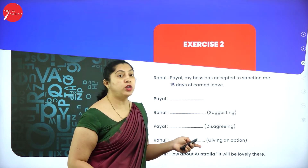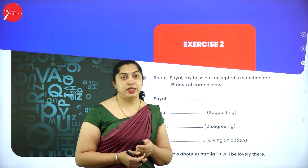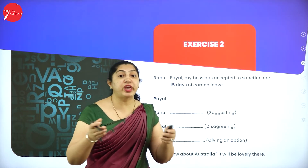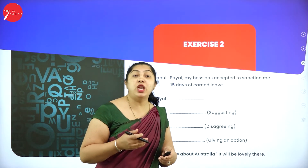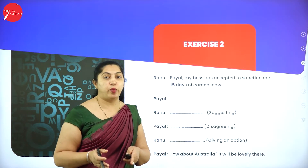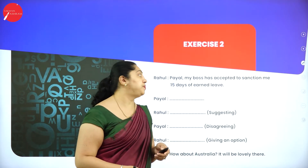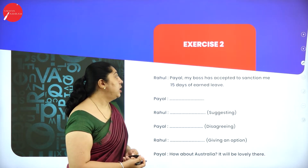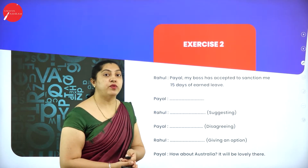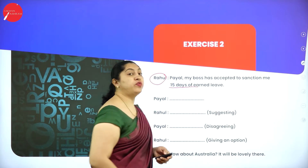The next exercise is about a husband and wife — Rahul and Payal. This is not a formal conversation; it will be an informal conversation. When I say informal, you cannot use terms like 'my sweetheart,' 'my darling,' 'my love' — you cannot use such local language. And nowhere in the conversation will you use things like 'my bro' or 'my sis.' Rahul tells Payal: 'My boss has accepted to sanction me 15 days of earned leave' — that is, paid leave.